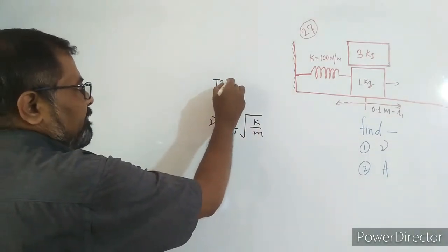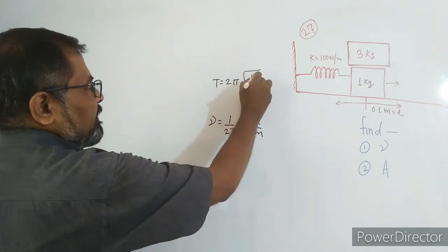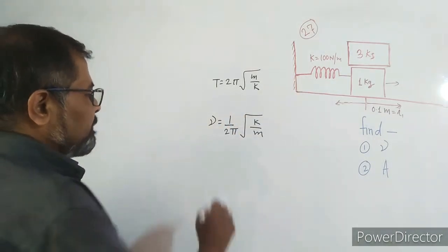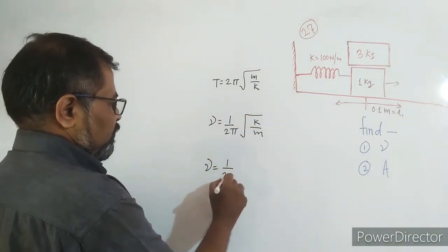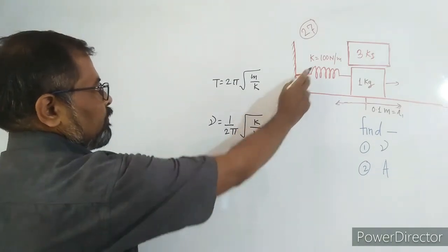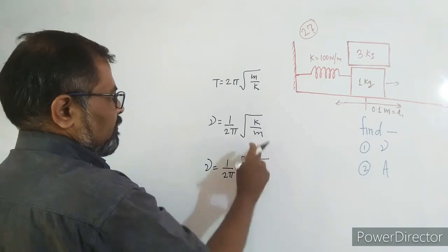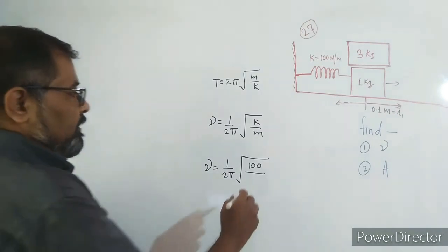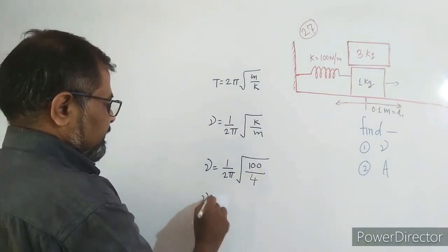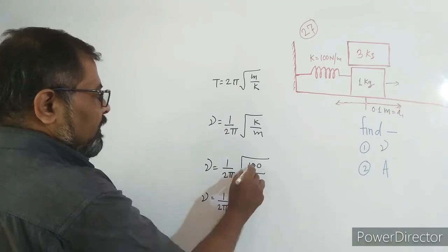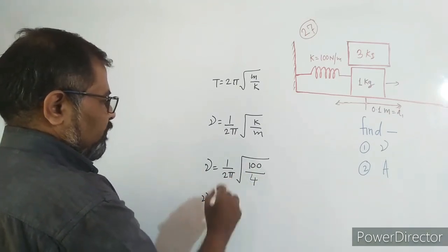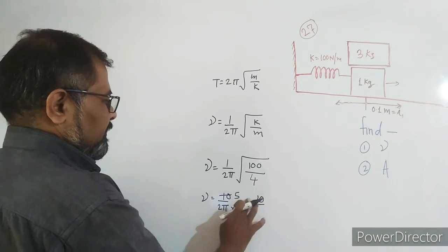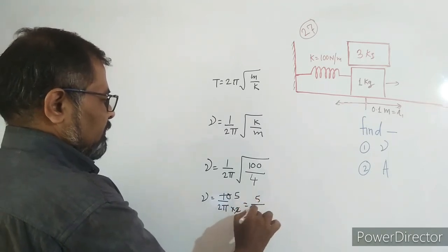So now we calculate the frequency. Frequency = (1/2π) × √(k/m). The spring constant k is 100 N/m and the total mass after placing the 3 kg block is 1 + 3 = 4 kg. So frequency = (1/2π) × √(100/4) = (1/2π) × √25 = (1/2π) × 5.